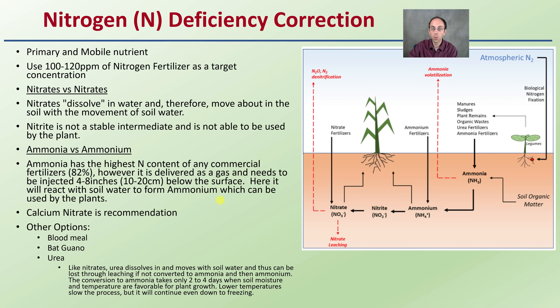Calcium nitrate can be used throughout the entire season when it's cooler out, same with blood meal and bat guano. As a last reminder with nitrogen: it happens quickly, so err on the lower side — you can always add more, but it's hard to take away.